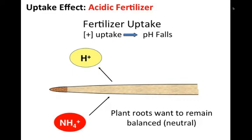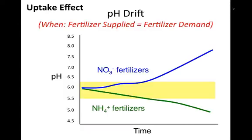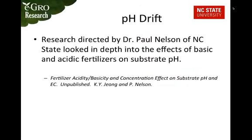With an acidic fertilizer, the same thing occurs — the root wants to remain balanced. If ammoniacal nitrogen is taken up by the root, a hydroxide is given off to counterbalance it, the positive is taken up, and pH falls over time. This all works when the fertilizer supplied equals the fertilizer demanded by the plants. When you're in balance, plant uptake is the overriding system affecting the substrate. However, we do see in some cases with a basic fertilizer that pH still goes acidic.